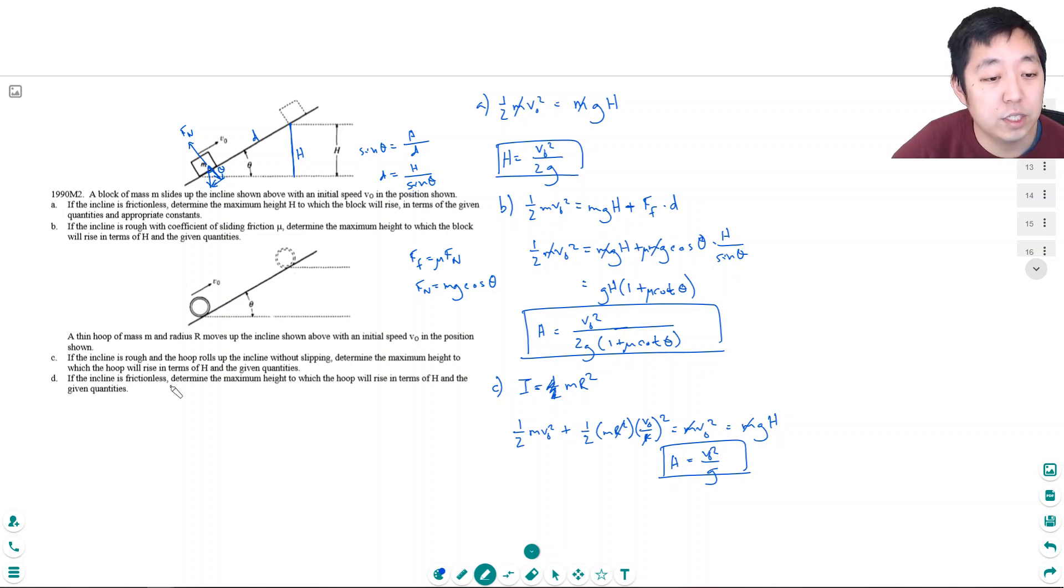If the incline is frictionless, determine the maximum height to which the hoop will. Oh, actually. Okay, never mind. I think we're going to assume that it's sliding and then it starts spinning. No, then it will slip. Yeah, never mind. I think we did it right on c.